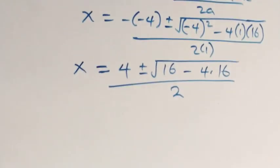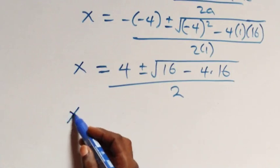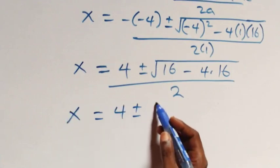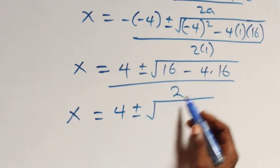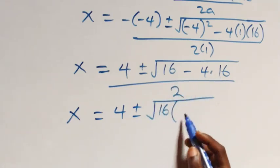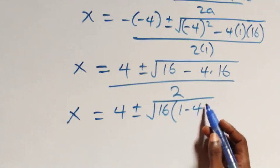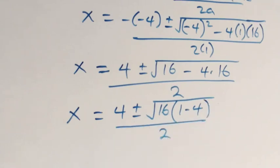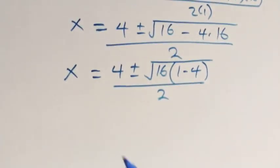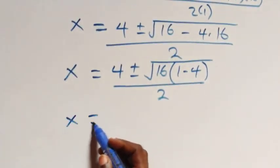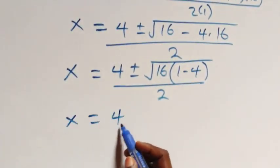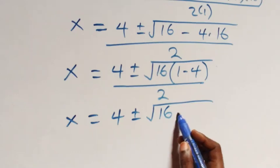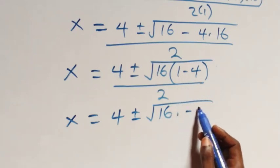This becomes x equals 4 plus or minus square root of 16 — which is common — factored out, leaving 1 minus 4. So x equals 4 plus or minus square root of 16 times (1 minus 4), which is 16 times negative 3, over 2.